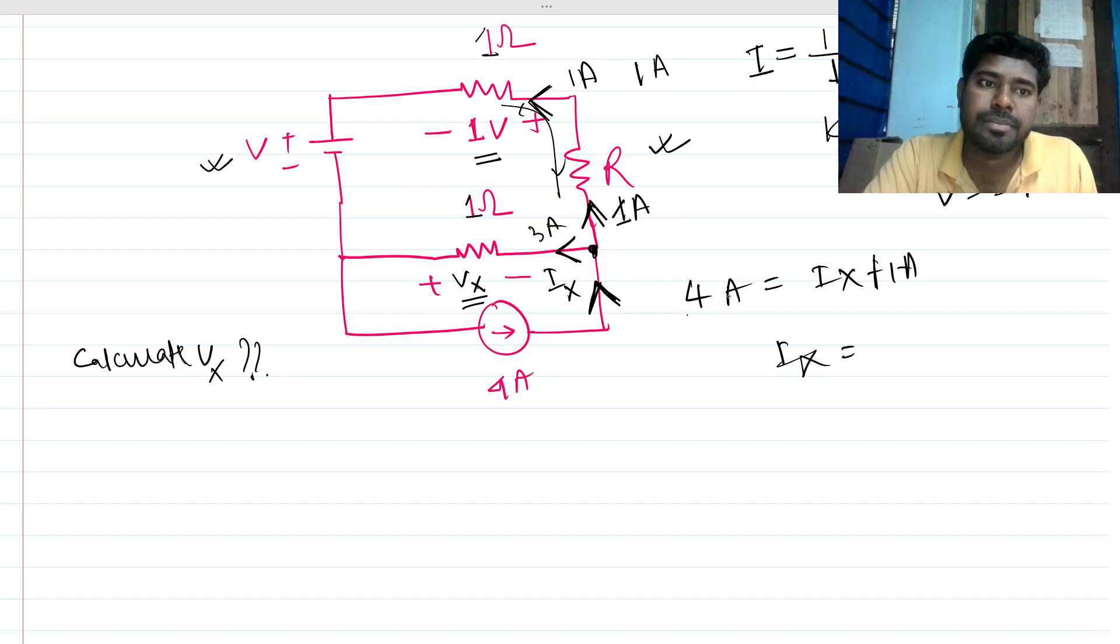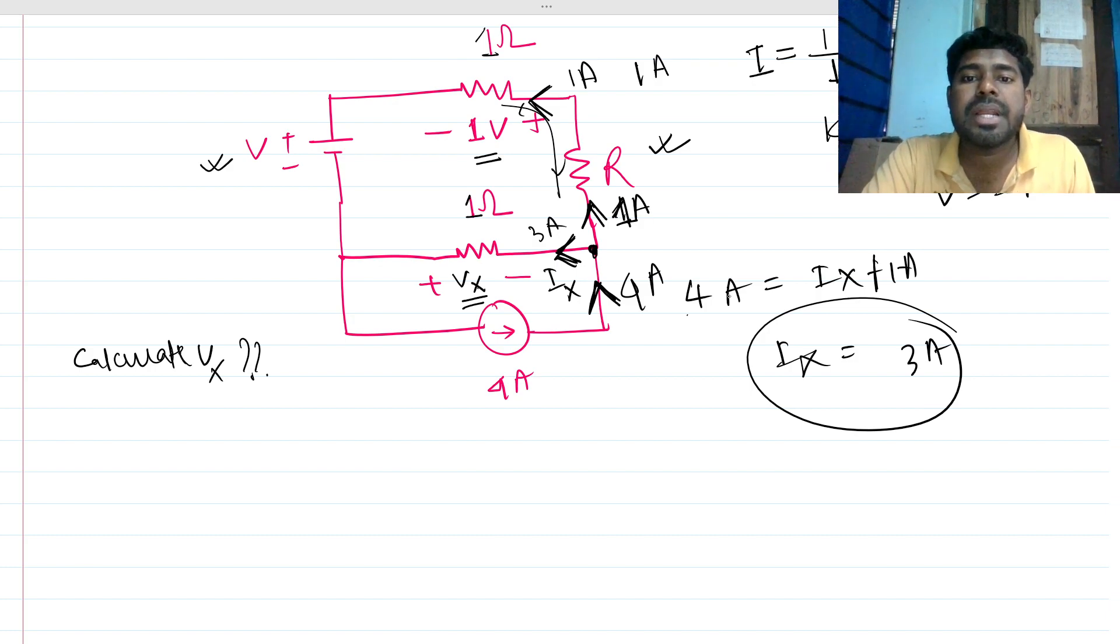So Ix will be nothing but 3 amps, because this is 4 amps. If in this branch is going 1 amp, this branch has to be carrying 3 amperes of current. If this 3 ampere current is going through that branch, the voltage drop...